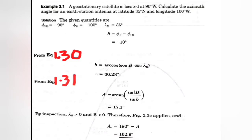We need to identify what kind of scenario this is. When lambda_e is greater than 0 and B is less than 0, this corresponds to scenario C (figure C). In that case, the azimuth angle equals 180° minus A. So this gives us the azimuth angle value.